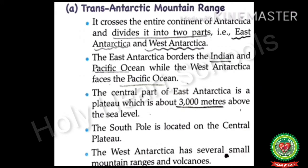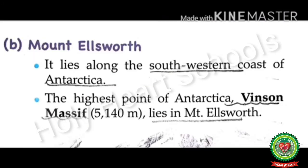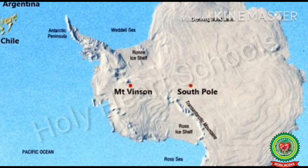Mount Ellsworth lies along the southwestern coast of Antarctica. The highest point of Antarctica, Vinson Massif, lies in the Mount Ellsworth range.